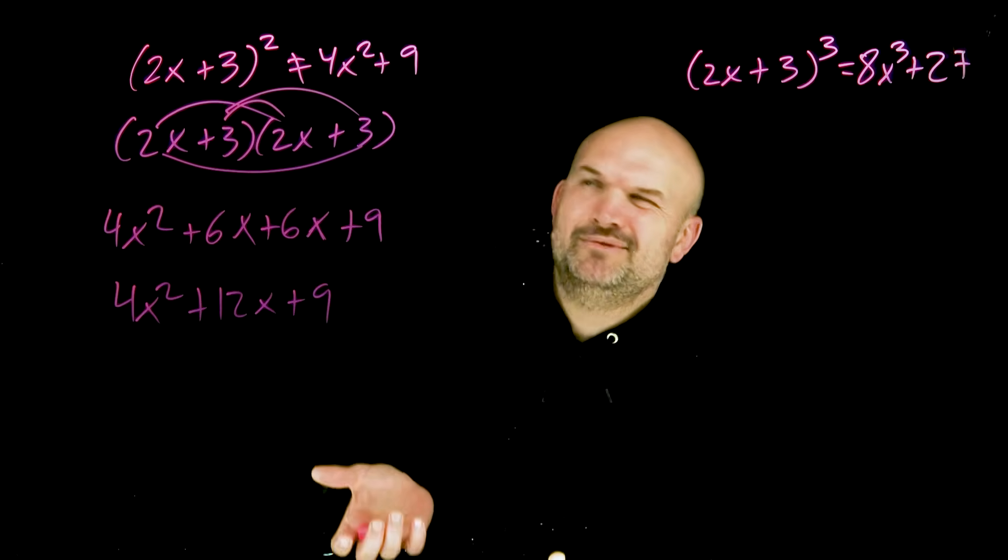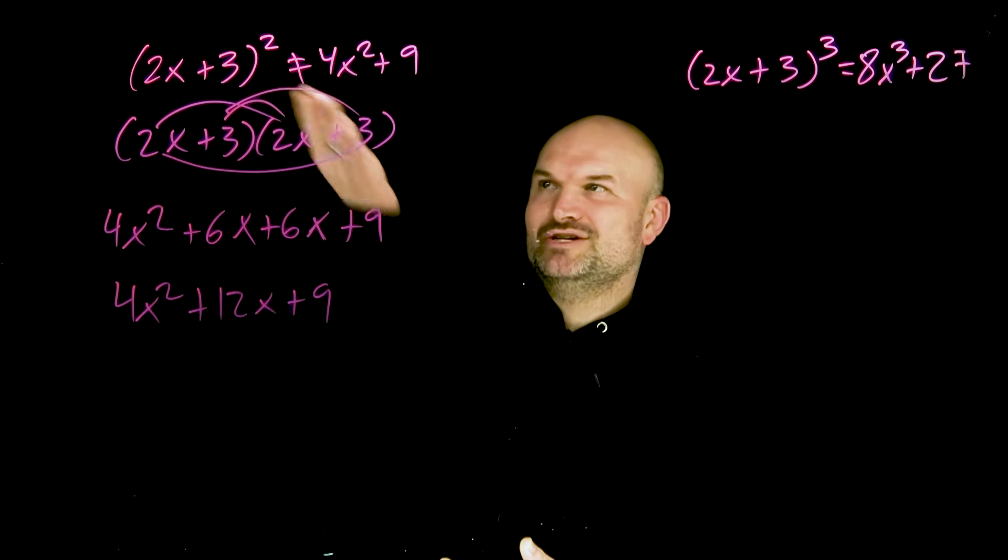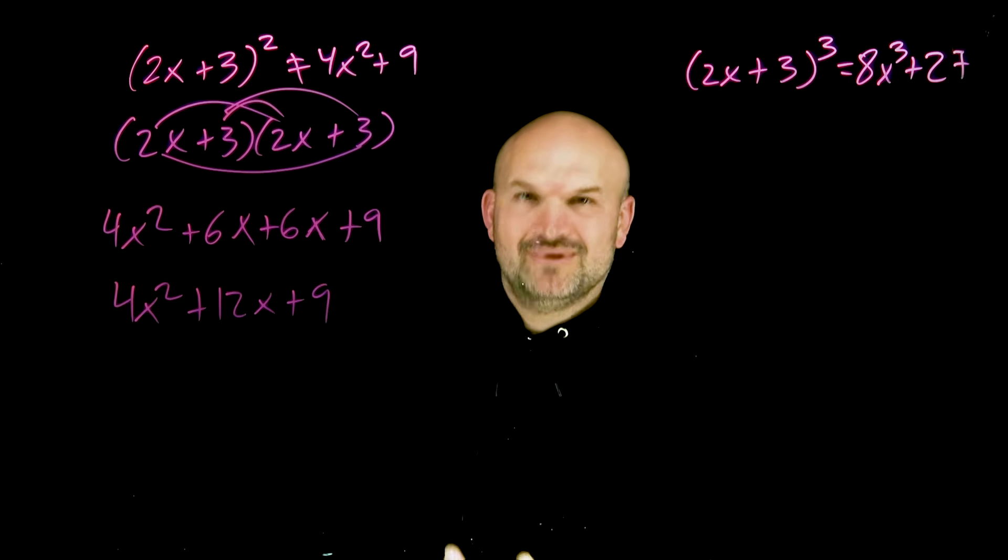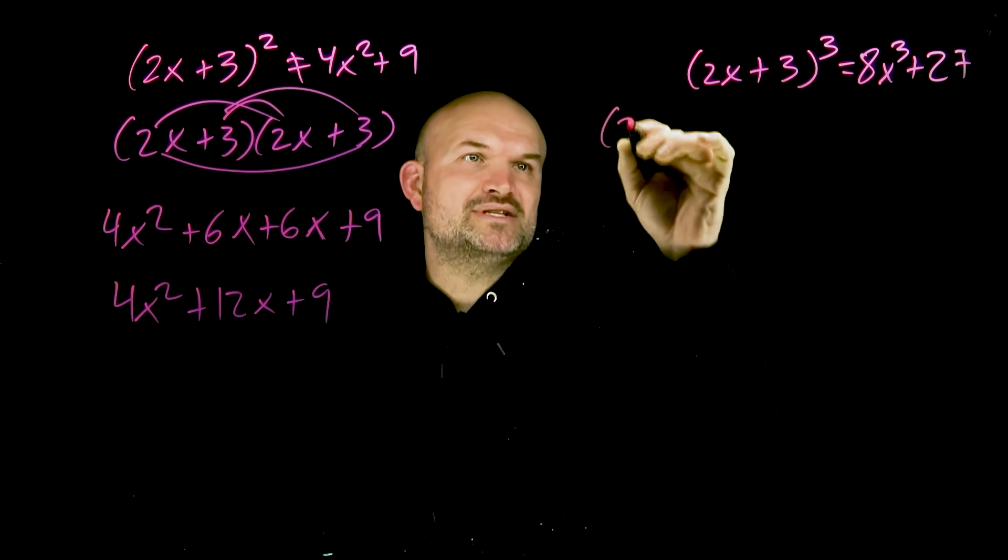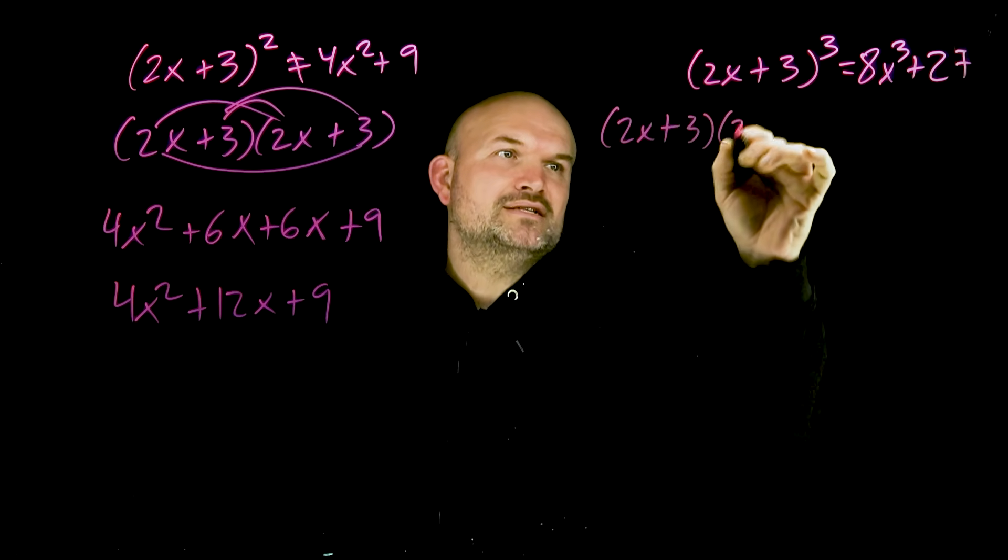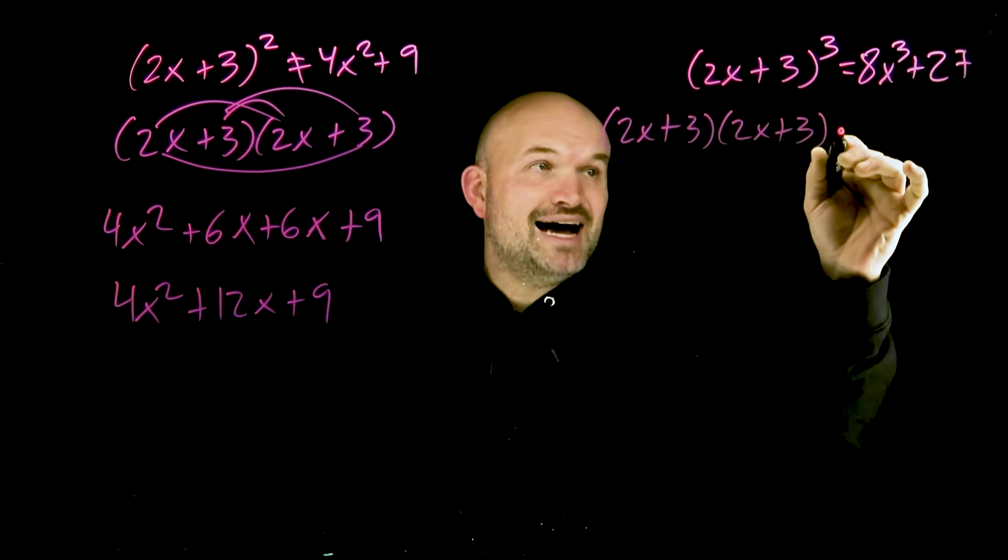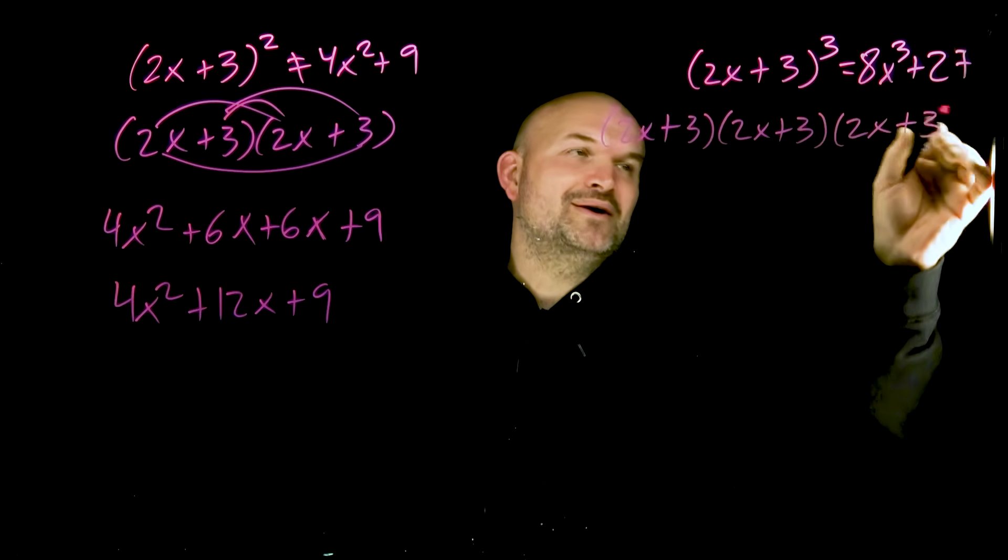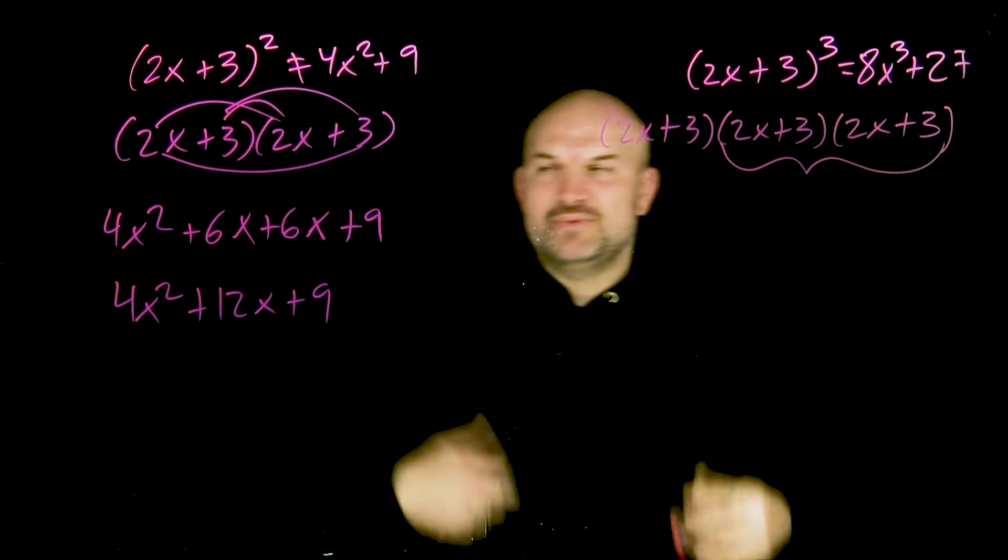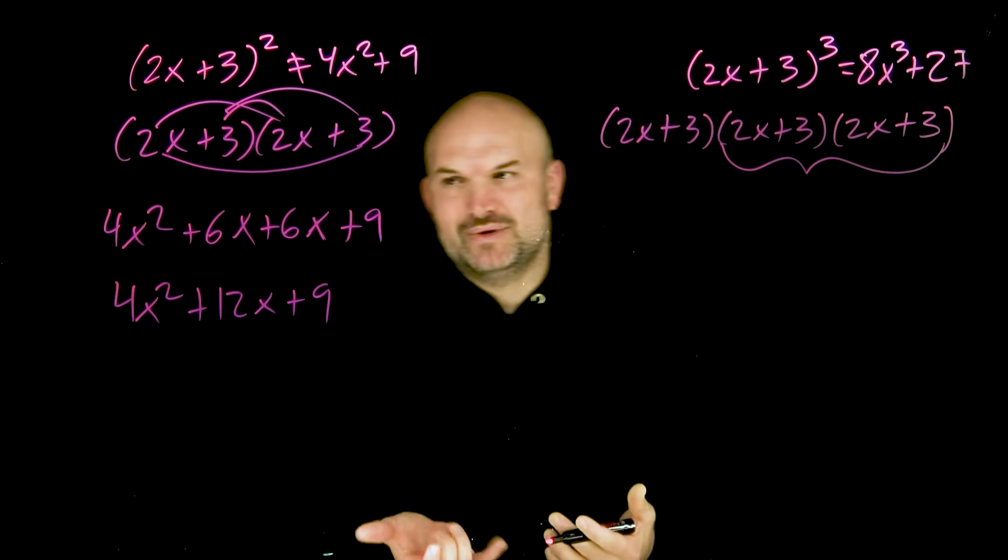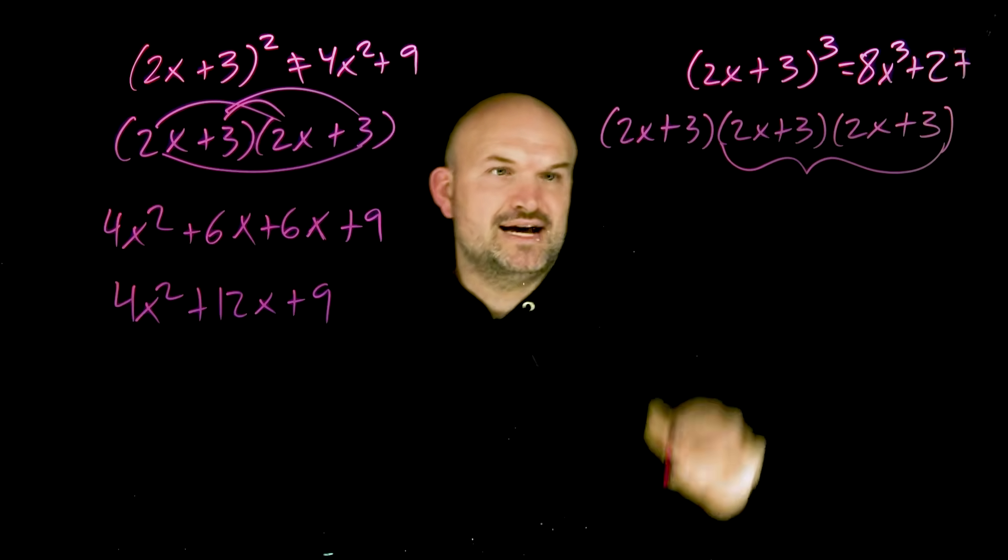Now, when we look at cubed, you're like, well, how much worse can it be? You're just raising it to one more power. Well, let's go and see. 2x plus 3 cubed represents 2x plus 3 times 2x plus 3 times 2x plus 3. The nice thing about this is we already know 2x plus 3 times 2x plus 3, that's 4x squared plus 12x plus 9.